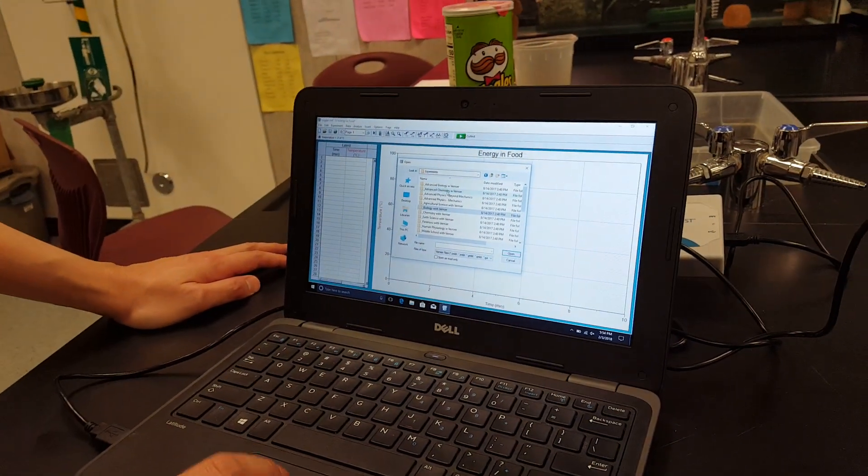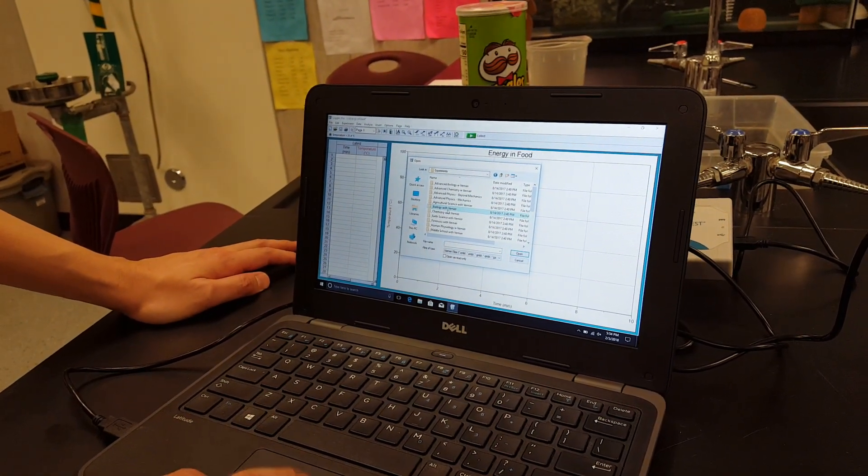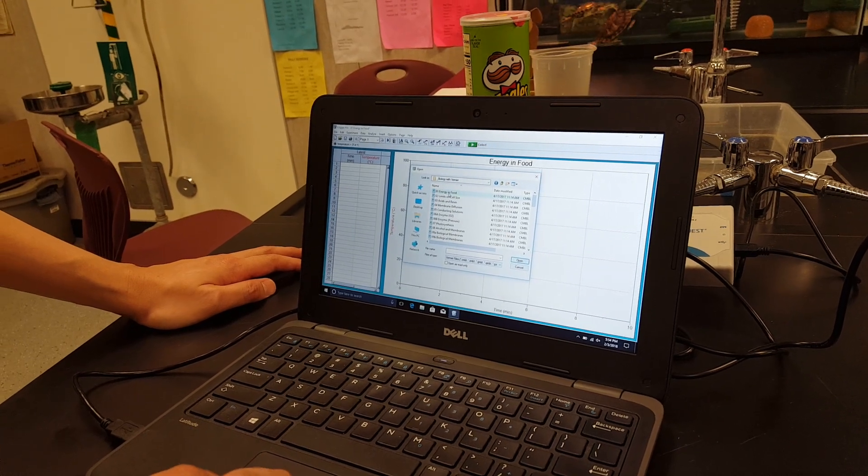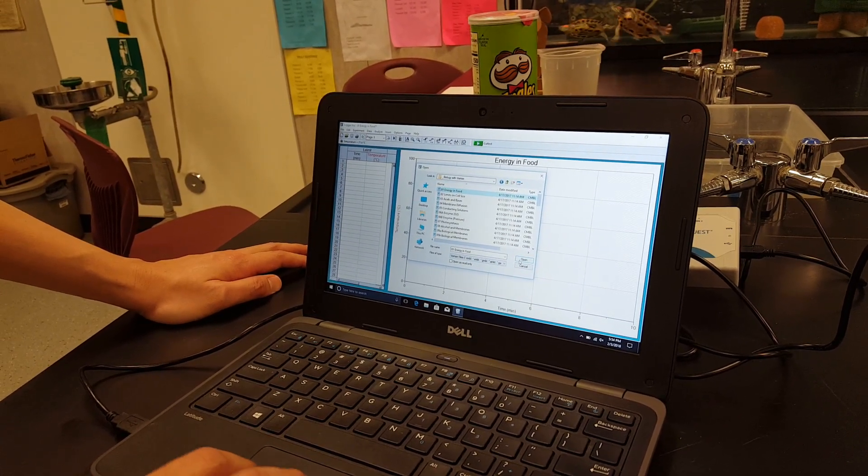Okay, so you open up the folder and you're going to open up biology with vernier. Then you're going to pick number one, energy and food. Click open.